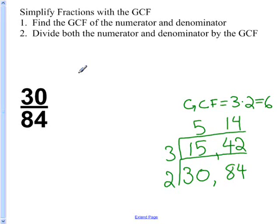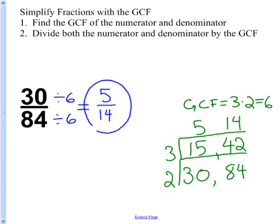Now I take the second step. I divide both the numerator and denominator by the GCF, which is 6. Remember, I have to divide or multiply the numerator and denominator by the same number in order to keep my fractions equivalent. 30 divided by 6 is 5. 84 divided by 6 is 14. And again, this is another example of how two numbers can look different, yet represent the same value. 30/84 is the same as 5/14.